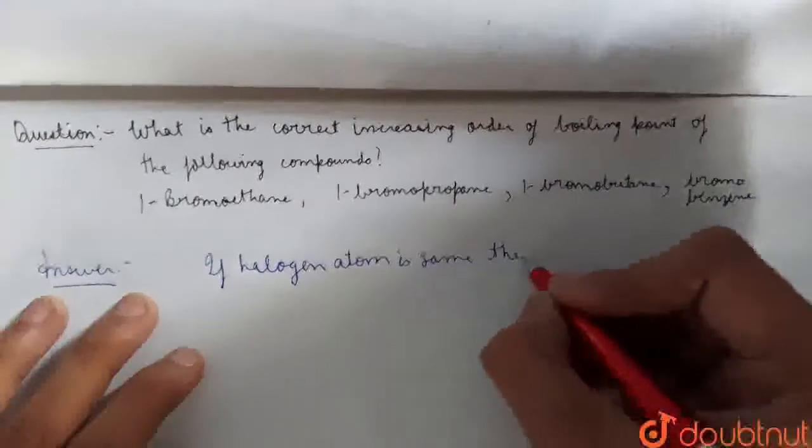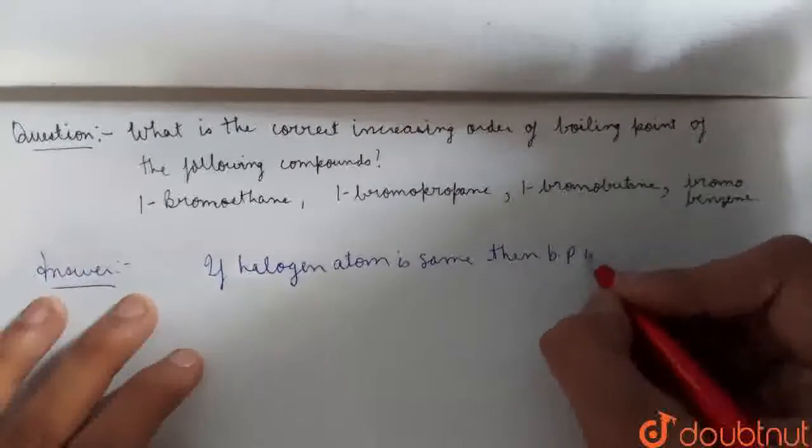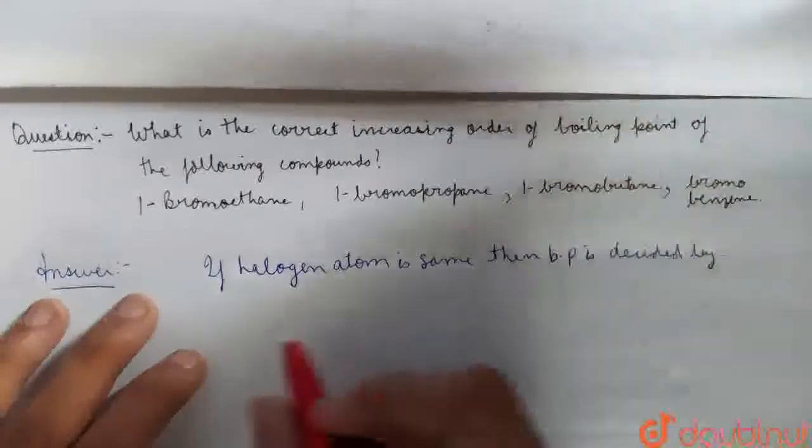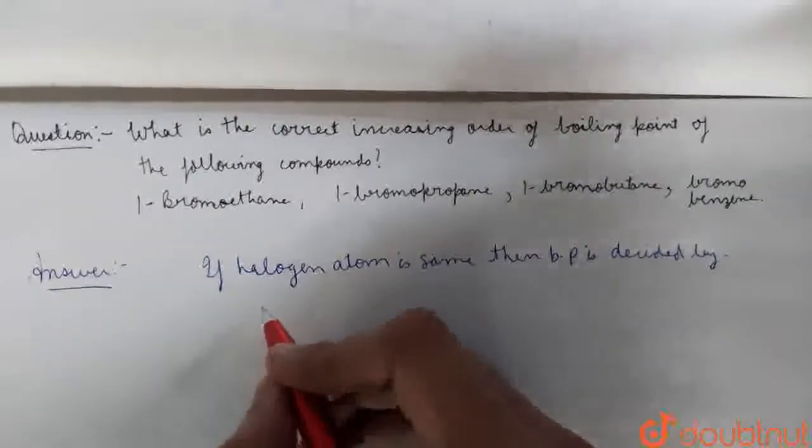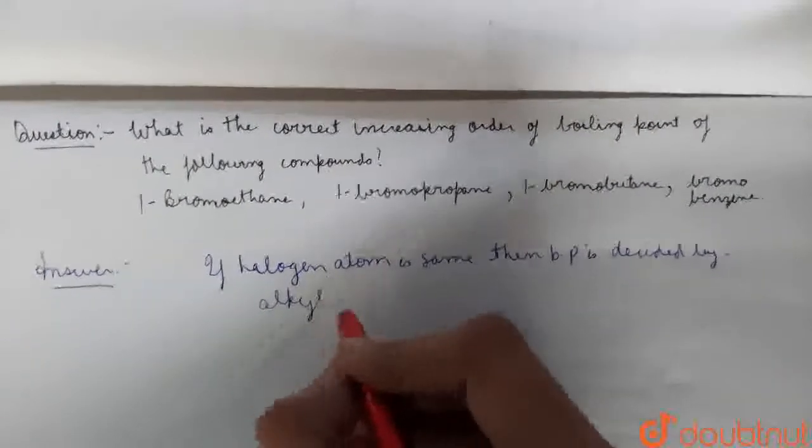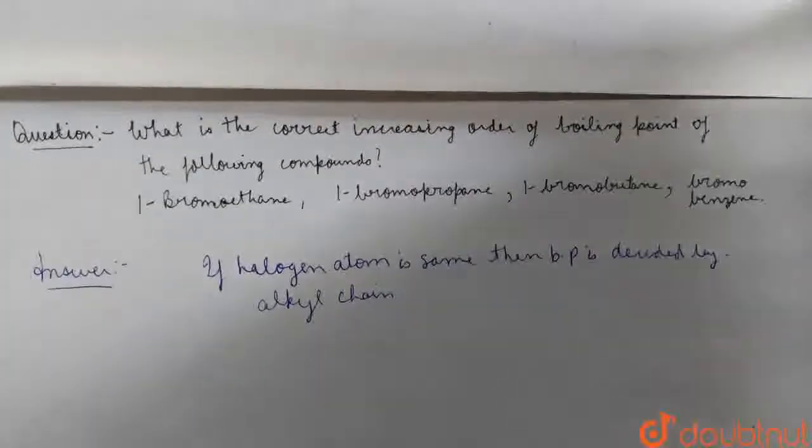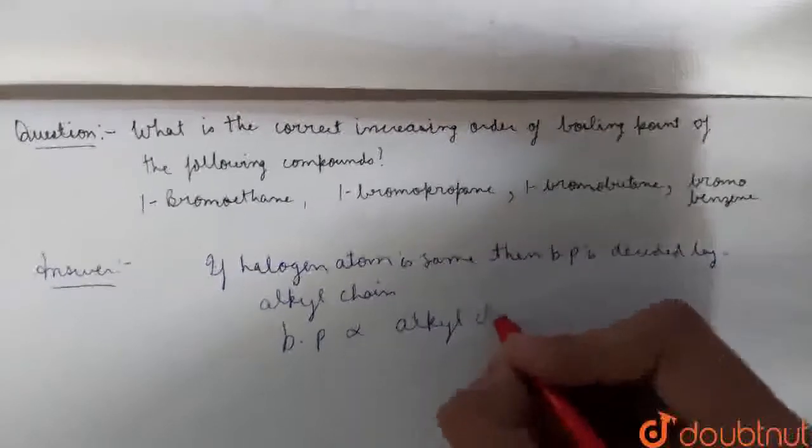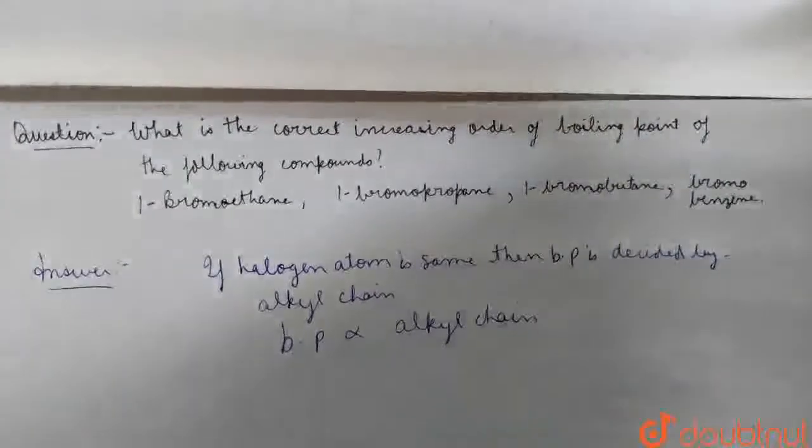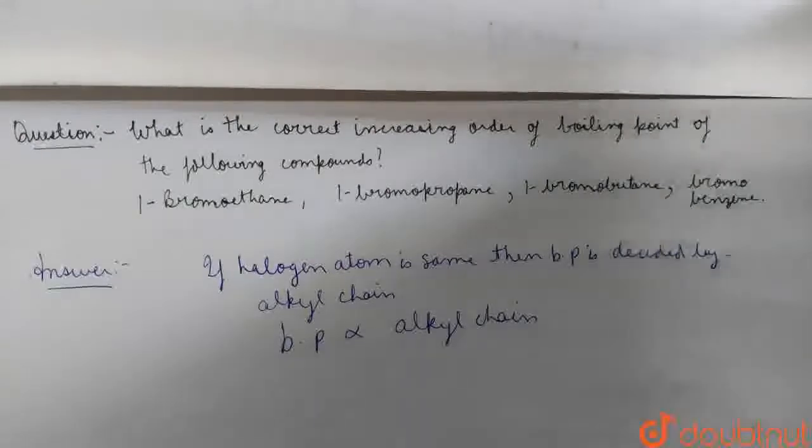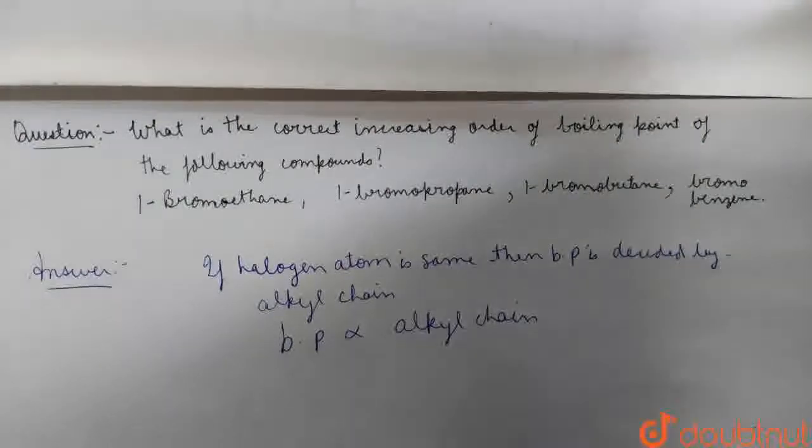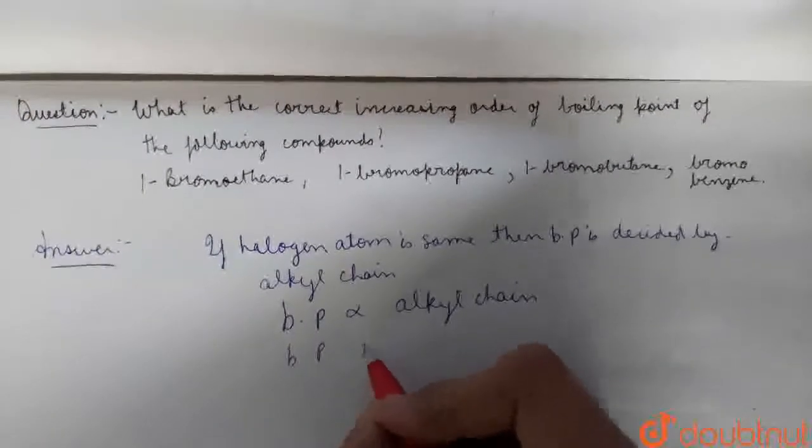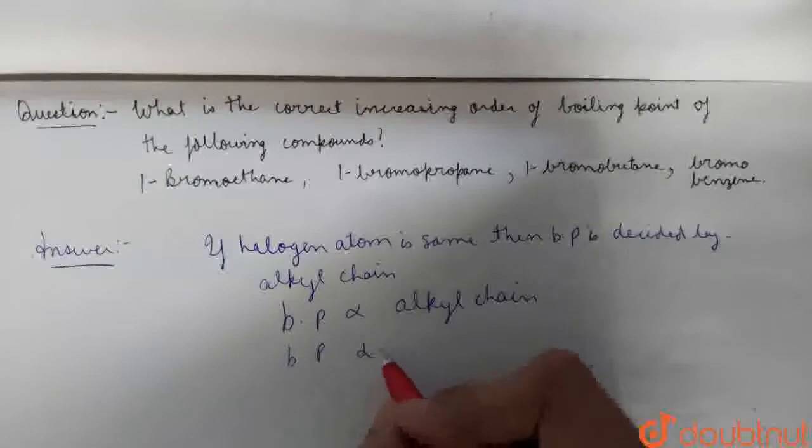If Halogen atom is the same, then boiling point is decided by the Alkyl Chain. Boiling point is directly proportional to the Alkyl Chain. The more carbon atoms in the chain, the higher the boiling point.